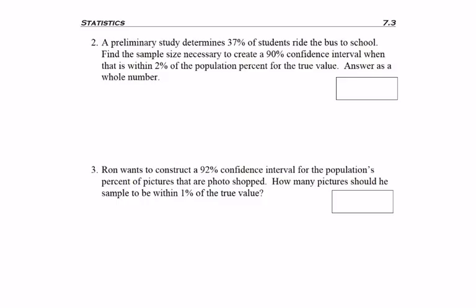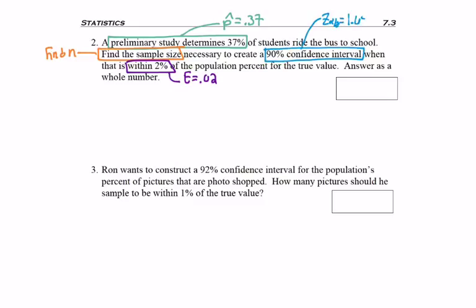As you dissect the other parts of this question, a preliminary study gave us a sample p-hat. Find the sample size lets us know we are looking for n, even though we're talking about a confidence interval for a population percent. We want to be within 2%, so e is 0.02. A 90% confidence interval is one of the scores I've memorized to be 1.645.